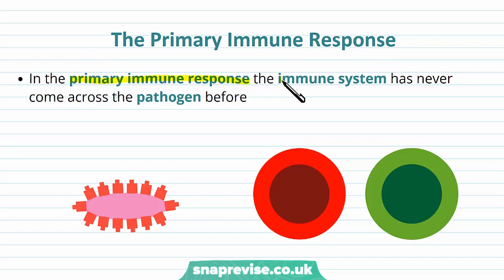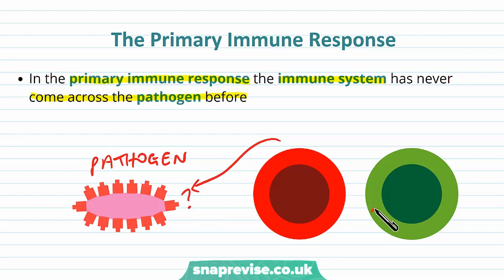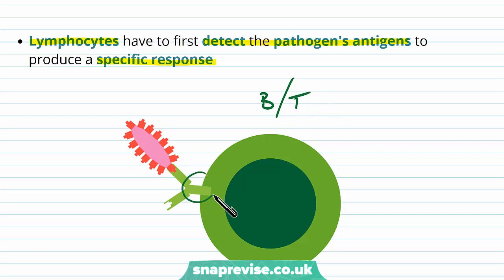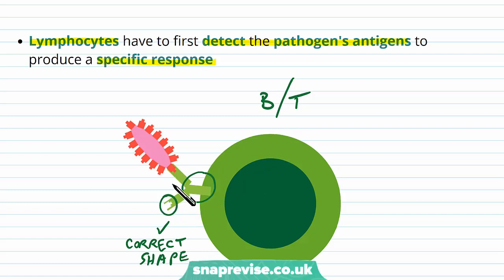In the primary immune response, the immune system has never come across this pathogen before — it's a new pathogen to our system. So we don't know which antibodies or which receptors respond to this pathogen and we don't know the best way to deal with it. The first steps are where the lymphocytes need to detect the pathogen's antigens to make sure that we produce a specific response. B and T cells have lots of different receptors and antibody receptors on their surface membranes and they have to find the right one with the correct complementary shape. There are millions of types of B and T cells floating around with different shapes, so it will take time for the right shape to match the antigen of the pathogen.